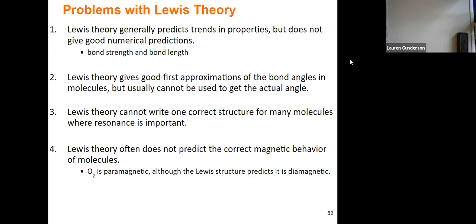We've already discussed Lewis theory in the previous lecture, but another problem with it specifically is the things that it doesn't do right. It can give us an idea about general property trends, but it is not very exact in terms of numerical values. Examples of this are bond strength and bond length — Lewis theory gives us the correct trends but the numerical values we estimate end up being incorrect. Lewis theory also gives a very good first approximation of bond angles, but we can't use it to get an actual angle of the molecule.